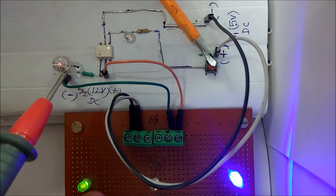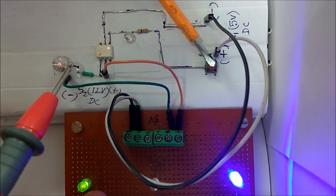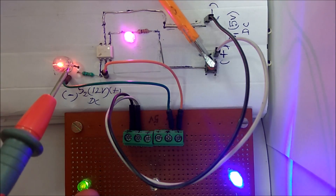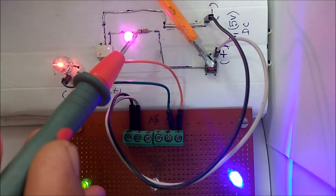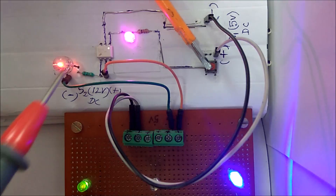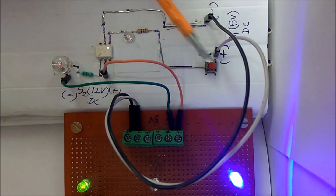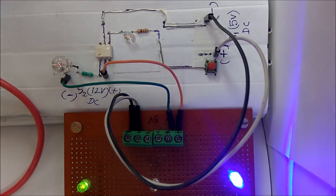This is the complete hardware demonstration of the optocoupler circuit — when a DC source is to be controlled while electrically isolated from another DC source, we have to use an optocoupler. For more videos please like, share and subscribe to our channel. Thank you very much.